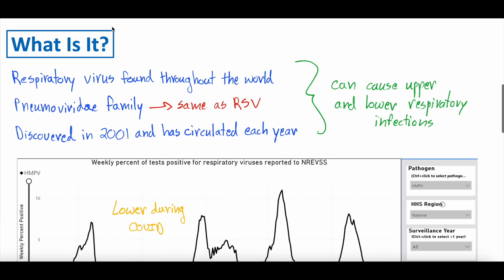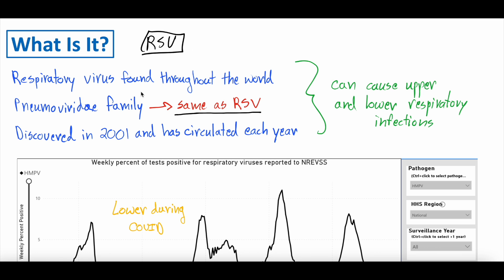Human metapneumovirus is a respiratory virus found all throughout the world. It's in the same category as respiratory syncytial virus. It is part of the Pneumoviridae family — the same family as respiratory syncytial virus, or RSV, which you might have heard of. It was discovered back in 2001 and has circulated every single year since then.